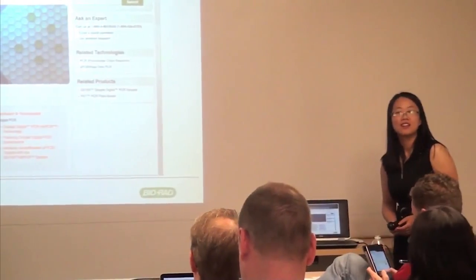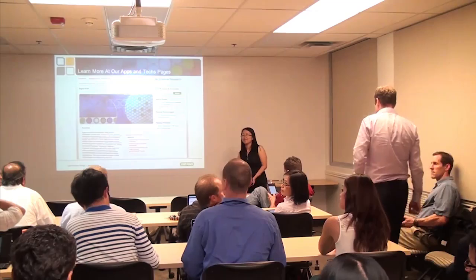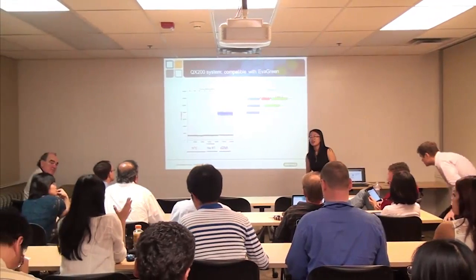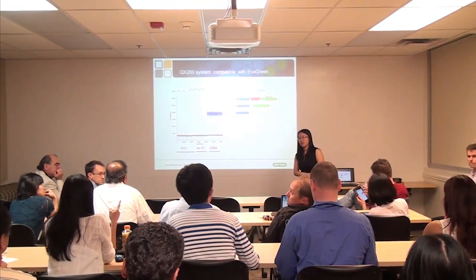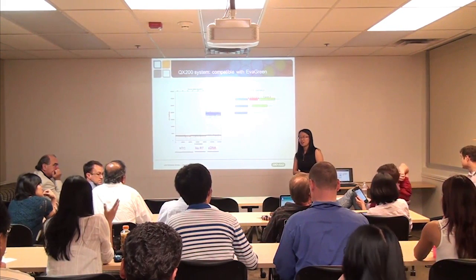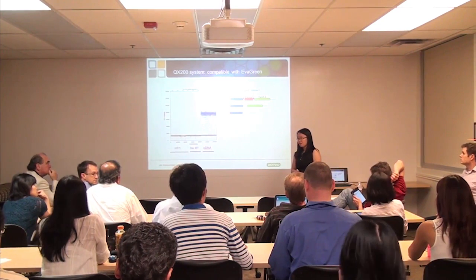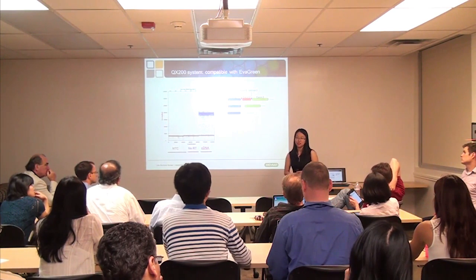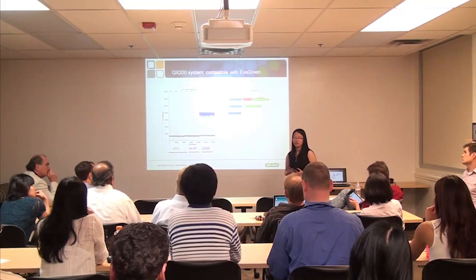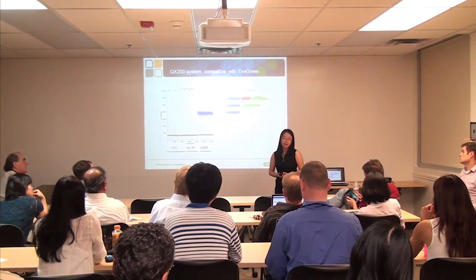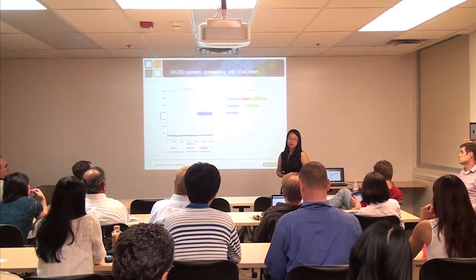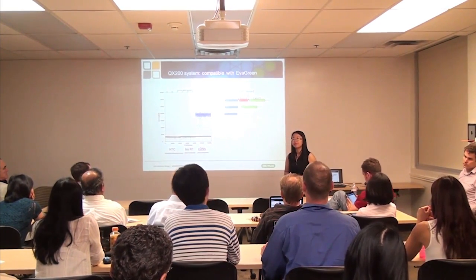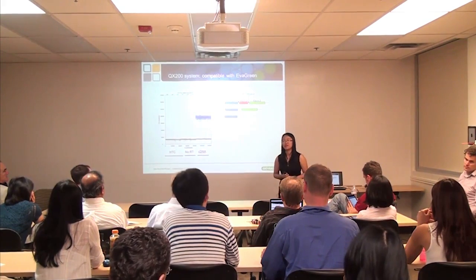We have a couple of minutes for questions. A question about EvaGreen and isoforms: what is the amplicon size range you can work with? A thousand base pairs would be a little difficult, because when you have a large-size amplicon and a short-size amplicon there is competition for PCR resources. A few hundred base pairs is no problem. You might need to optimize the thermal cycling protocol in order to get all the amplicons amplified to a similar extent, but you can optimize for longer amplicons.